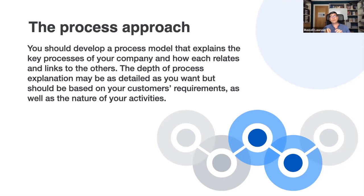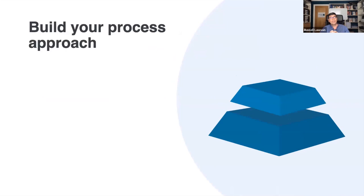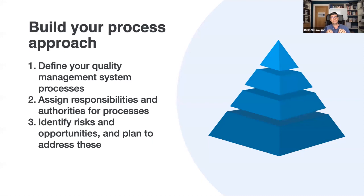ISO 9001 includes specific requirements for adopting the process approach when developing, implementing, and improving your management system. This requires you to systematically define and manage your processes. You should always develop a process model that explains the key processes of your company and how each relates and links to the others. The depth of your process explanation can be as detailed as you want, but it should always be based on your customers' requirements as well as the nature of what you actually do.